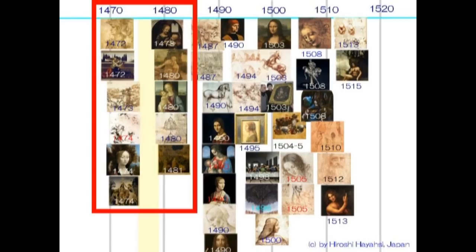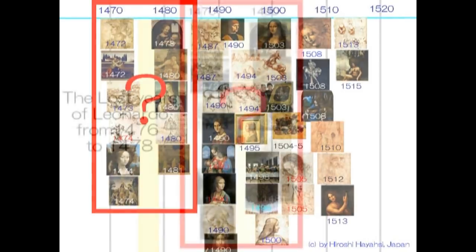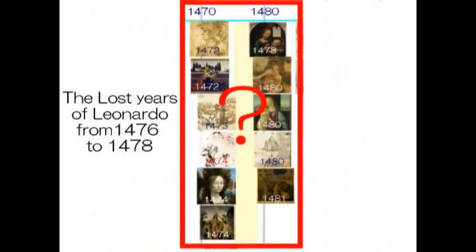もちろん記録が残っていないからといって、ダ・ヴィンチが他の場所に行っていたということにはなりませんが、しかしその3年間の間、レオナルド・ダ・ヴィンチはひょっとしたらこの地球にはいなかったのかもしれません、というロマンチックな話です。